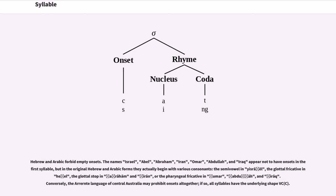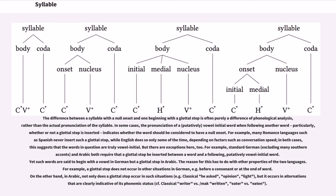Conversely, the Aranda language of Central Australia may prohibit onsets altogether; if so, all syllables have the underlying shape VC. The difference between a syllable with a null onset and one beginning with a glottal stop is often purely a difference of phonological analysis, rather than the actual pronunciation of the syllable.